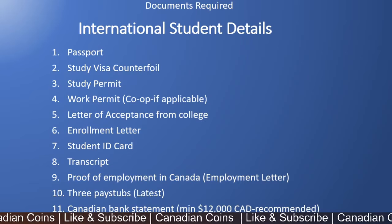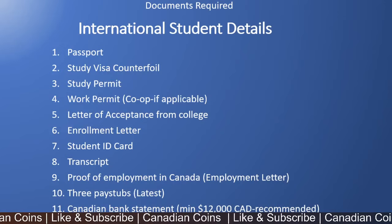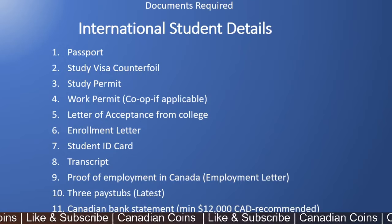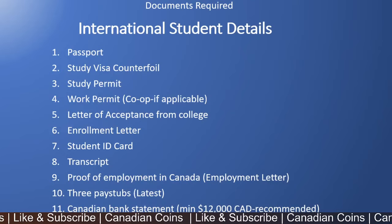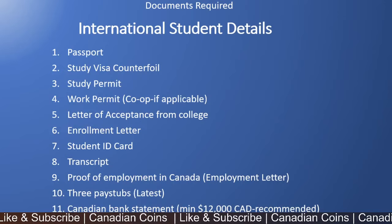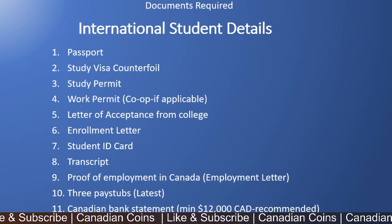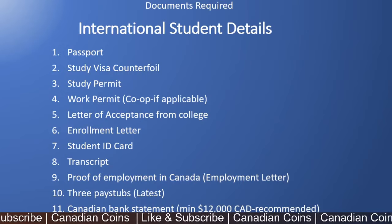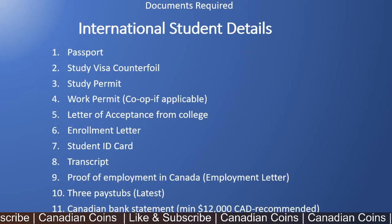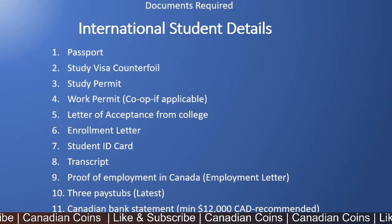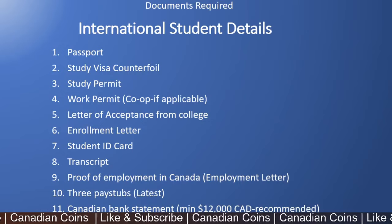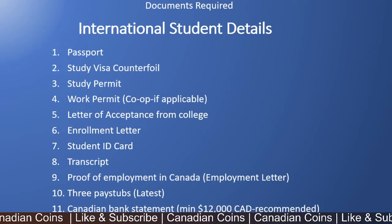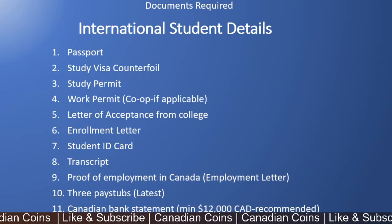International student details are the details of the student who is already in Canada. You have to have the passport, the study visa counterfoil which is already stamped in your passport, the study permit of the student, work permit if the student has a co-op, the letter of acceptance from the college, the initial letter you received from the college, and the enrollment letter from the college student website. Next is the student ID card, and you have to have the transcript — the unofficial transcript you can download from the college website. You should also be working a part-time job and show proof of employment from a Canadian employer, and attach the three most recent pay stubs.